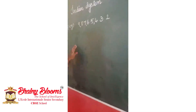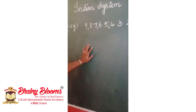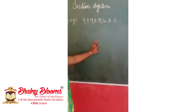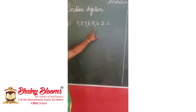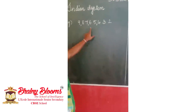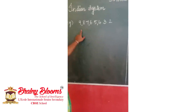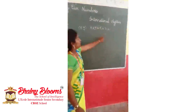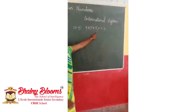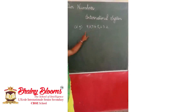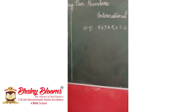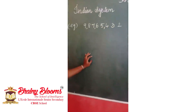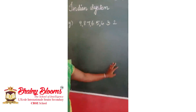Again I will repeat: how to place commas in the Indian system and international system. In the Indian system, from the right after three digits, place a comma, followed by every two digits. But in the international system, from the right after three digits, place a comma, followed by every three digits. I believe you are now clear about how to place commas in both systems.